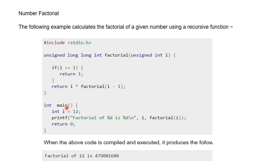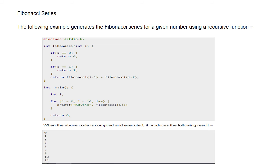When the above code is compiled and executed, it produces the following output. संख्या कितनी छोटी है लेकिन उसका factorial कितना बड़ा आया है — इसलिए input के लिए साधारण int i लिया लेकिन factorial store करने के लिए long type का variable लिया।